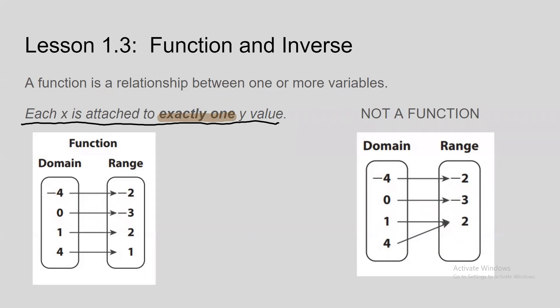The domain represents x values and the range represents y values. This is a function because every single x value — negative four, zero, one, and four — leads to exactly one y value: negative two, negative three, two, and one. We can write these as coordinates and graph them.